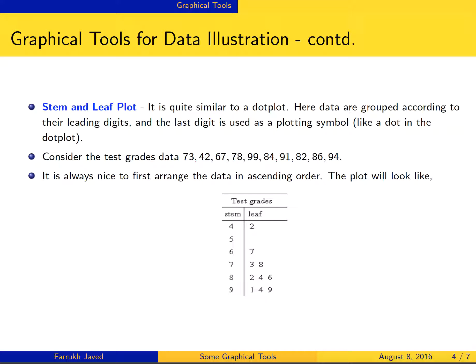Another plot is the stem and leaf plot, also very popular and classic. It's quite similar to a dot plot, but here data are grouped according to their leading digits, and the last digit is used as a plotting symbol. The leading digits we make as the stem of the data, and then we use the last digit as a leaf.